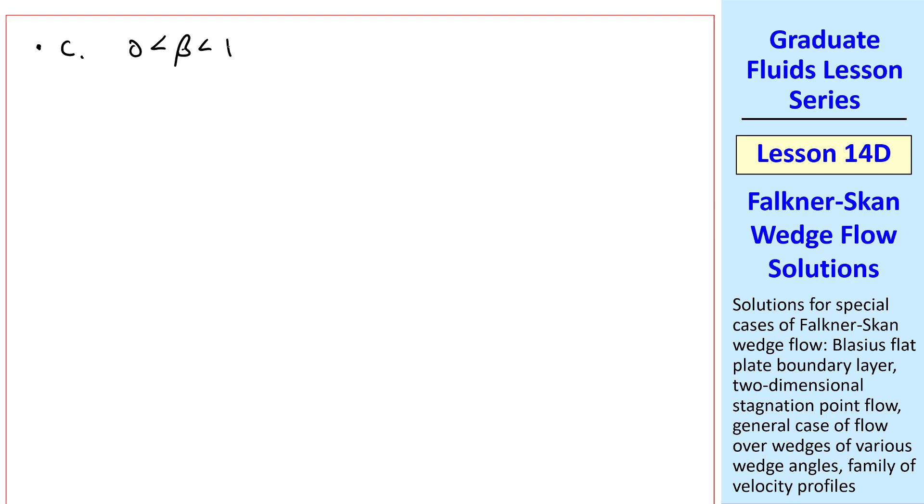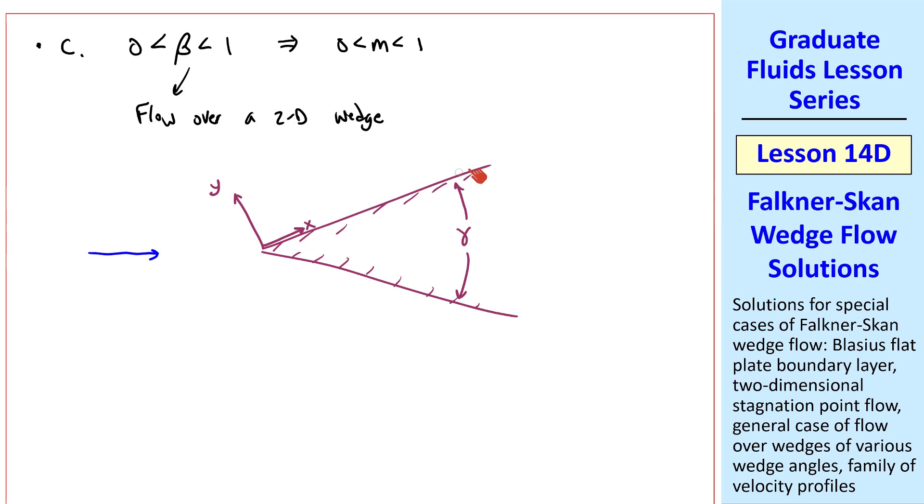What if beta is between 0 and 1? This also corresponds to m being between 0 and 1. And this ends up being flow over a 2D wedge of angle gamma, with flow coming from the left. And our axis is tilted such that x grows along this wall. There's a stagnation point here. Flow enters from the left. And the streamlines will look something like this on the top portion. It's, of course, symmetric top and bottom here. For this case, u of x is bx to the m, which is x to the beta over 2 minus beta. Now the question is, how do we relate this exponent to the wedge angle gamma?